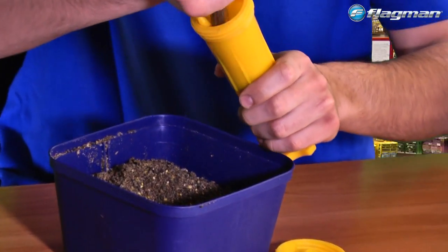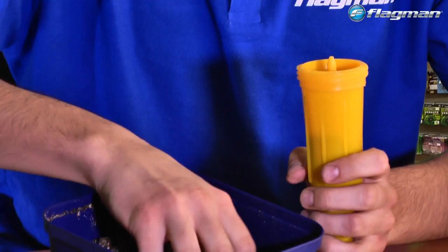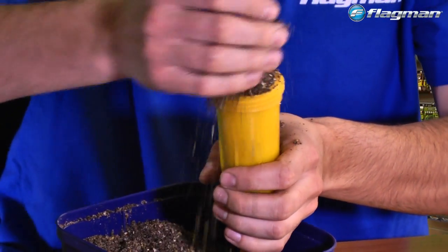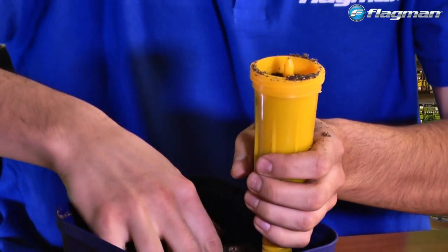Прикормку нужно добавить необходимое количество и ровно столько, сколько нужно для ловли. Добавляем прикормку.